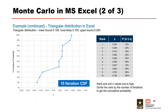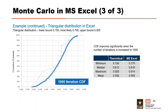In this example we only did 10 iterations, which is woefully inadequate — we would do many more in practice. Once we have all x values, we rank and sort them from low to high and the cumulative probability for a given x value is its rank divided by the number of iterations. Upping the number of iterations to 1,000, the CDF looks much better — we get a nice S-curve and a good estimate of the median and mean. The tails would be better represented with even more iterations.